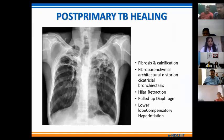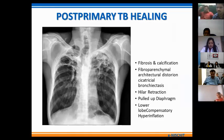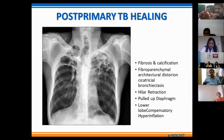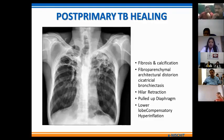Coming to the healing phase of post-primary TB, healing occurs mainly with fibrosis and calcifications. Because of this fibrosis there are multiple areas of architectural distortion, cicatricial bronchiectasis, volume loss, and fibroparenchymal densities. There is compensatory emphysema in the unaffected areas of the lungs, predominantly the lower lobes. Other fibrotic sequelae such as pulling up of the diaphragm, diaphragmatic tenting, and hilar retraction may also be seen in healed lesions of TB.